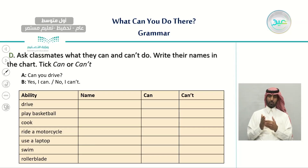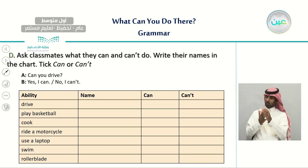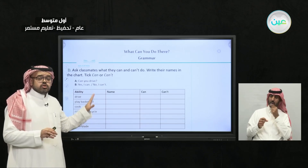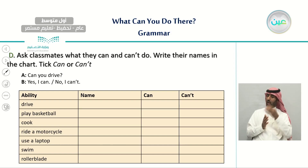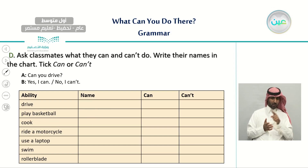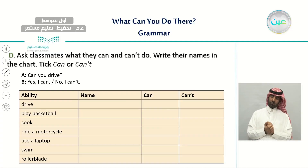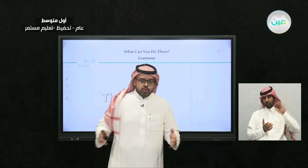The last activity: ask your classmates, family members, or friends what they can or can't do, and write their names in the chart — ticking can or can't. For example, ask a friend: Can you drive? If they say yes, I can, put a tick under 'can' and write their name. If another person says no, I can't play basketball, write their name and tick 'can't.' Thank you very much for watching, and I'll see you next time.